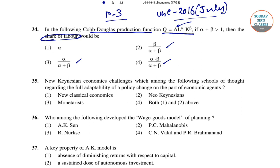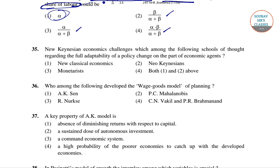We know the parameters alpha and beta measure the labor share and capital share in total output if the marginal productivity conditions hold. If the marginal productivity condition holds, the share of labor is alpha. So for question 34, alpha is the share of labor and beta is the share of capital.